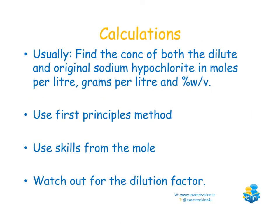For this experiment the calculations usually ask you to find the concentration of the diluted and original sodium hypochlorite solution in moles per litre, grams per litre, and percentage weight per volume. You will always use the first principles method to solve this. The formula approach has not worked in recent years. You'll also need your skills from the mole chapter and you should look out for the dilution factor.